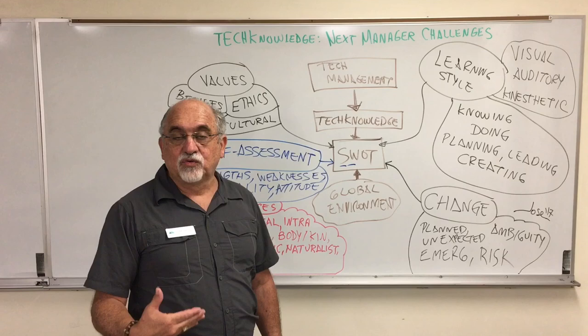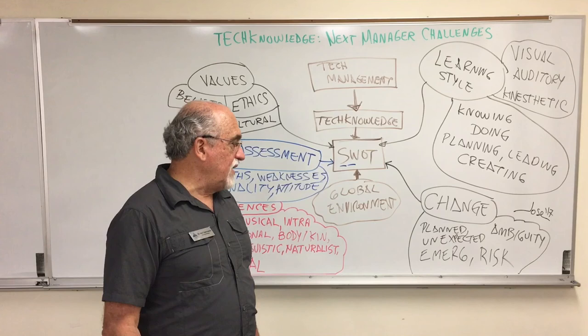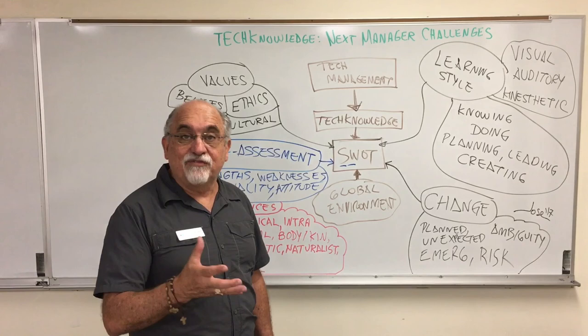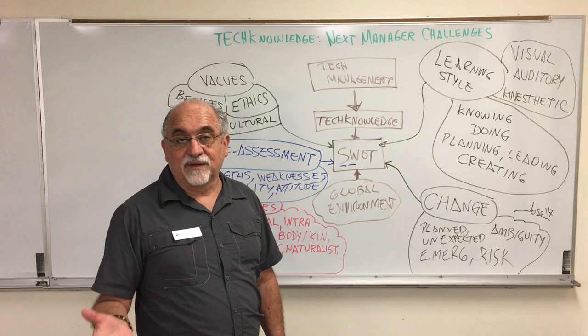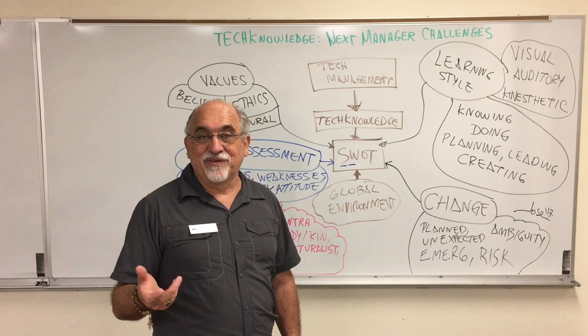When talking about change, we also have to talk about ambiguity — sometimes you have to give room to flexibility. We have to talk about risk: how to assess it, what is the probability that something will happen, and what is the consequence. This is the engineering mindset of doing a risk assessment.